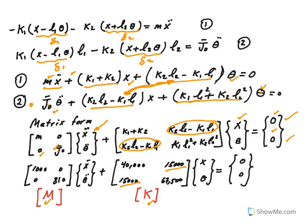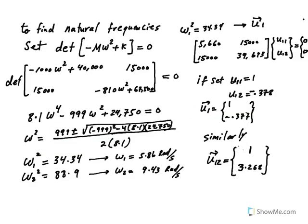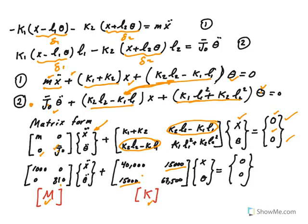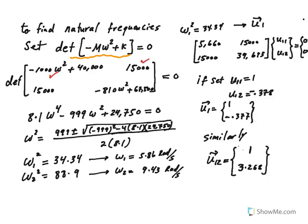Now you guys remember from before that in order to find natural frequencies we have to set the determinant of minus M omega squared plus K equals zero. So using the mass matrix and K matrix all you have to do is multiply this by minus omega squared and add it to 40,000. So we get minus 1000 omega squared plus 40,000 for the first term as you could see here, and then similarly the same thing. Go ahead and do the determinant, this term times this term minus the product of these two.